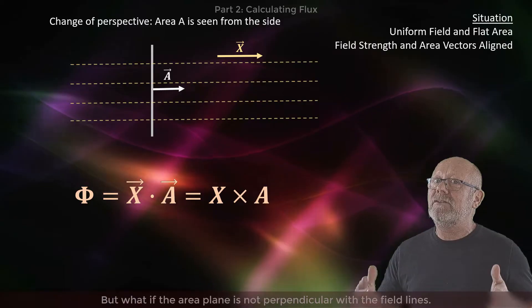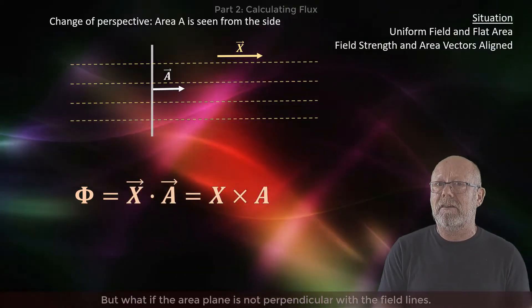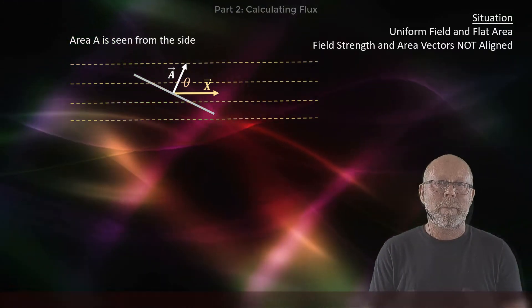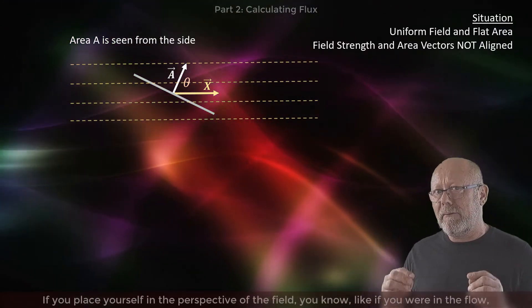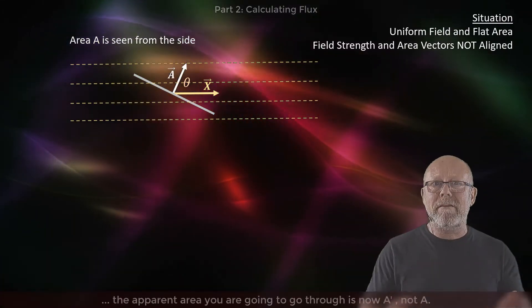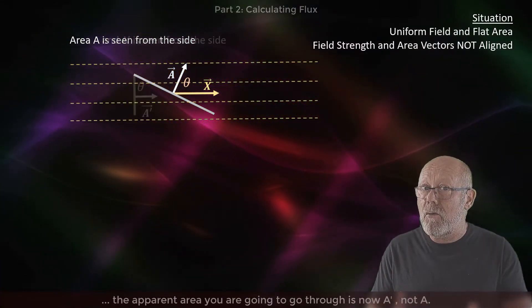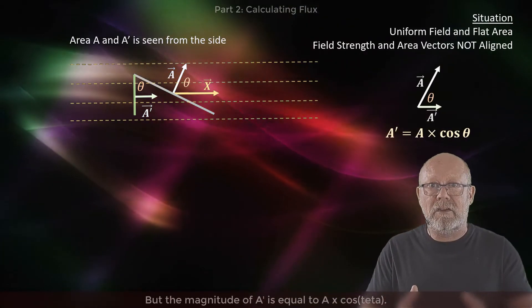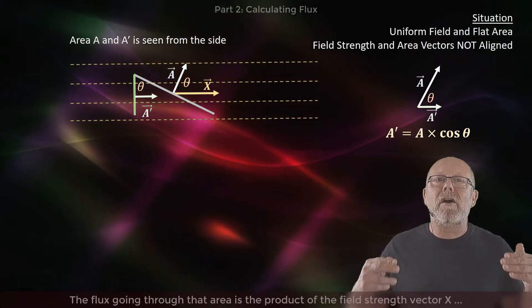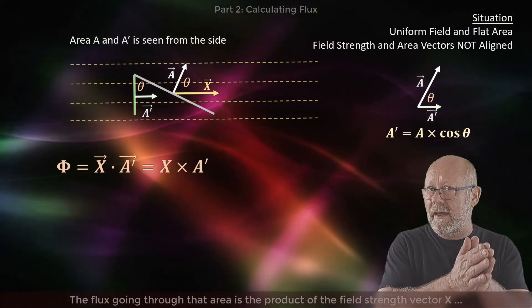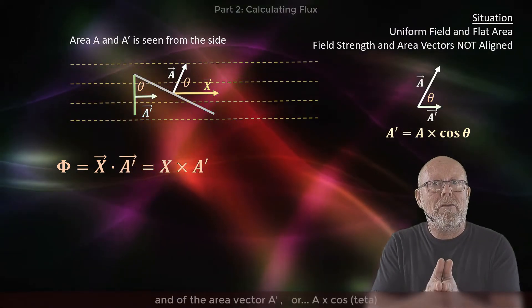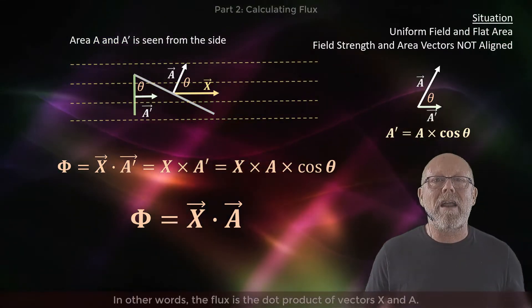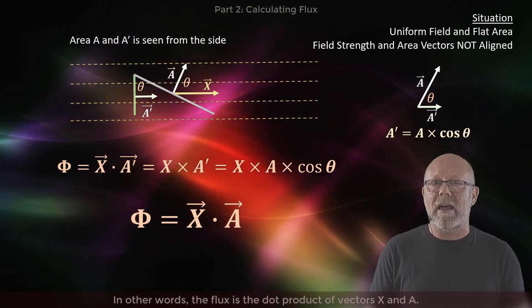But what if the area is not perpendicular to the field lines? In this drawing, you see that the vector area is making an angle theta with the field vector. If you place yourself in the perspective of the field, you know, like if you were in the flow, the apparent area you are going to go through is now A prime, not A. But the magnitude of A prime is equal to A cosine theta. So the flux flowing through that area is a product of the field strength vector χ and of the vector A prime, or A cosine theta. In other words, the flux is a dot product of vectors χ and A.